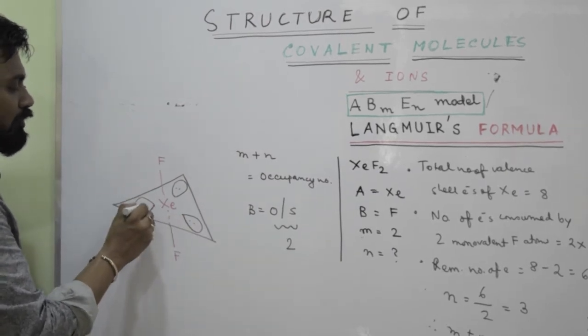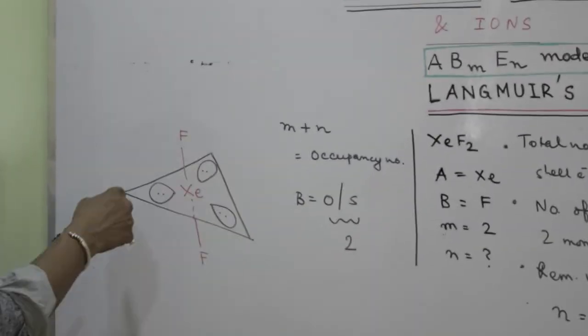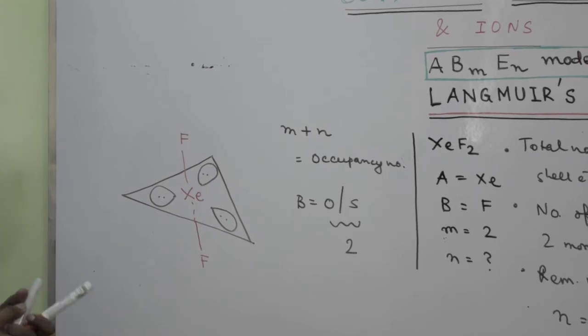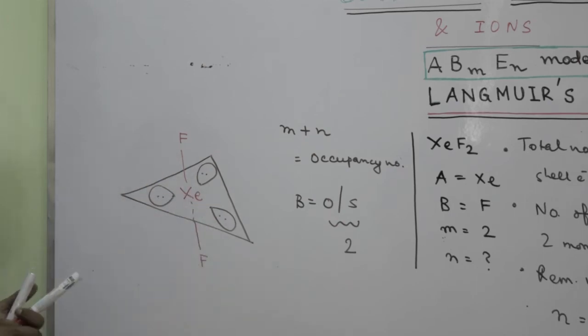And the two fluorines and the lone pairs are placed on the equatorial plane. You know why the lone pairs are placed on the equatorial plane? The equatorial plane, the lone pairs are at 120 degrees with respect to each other. So to minimize the lone pair-lone pair repulsion, it is placed in this way.